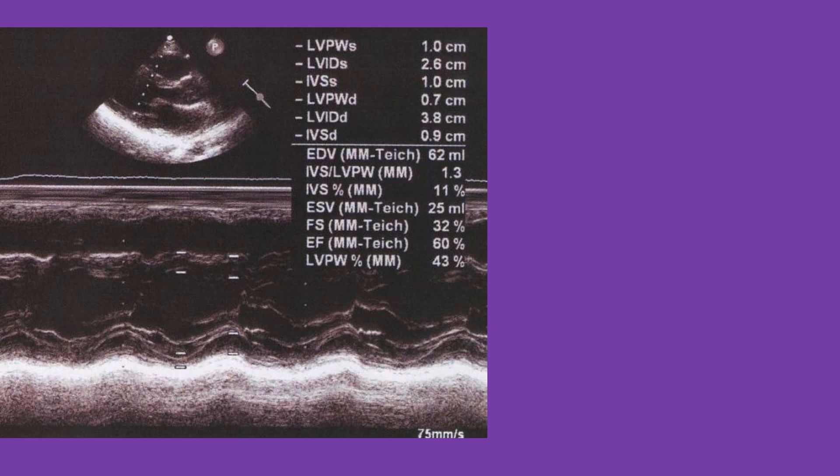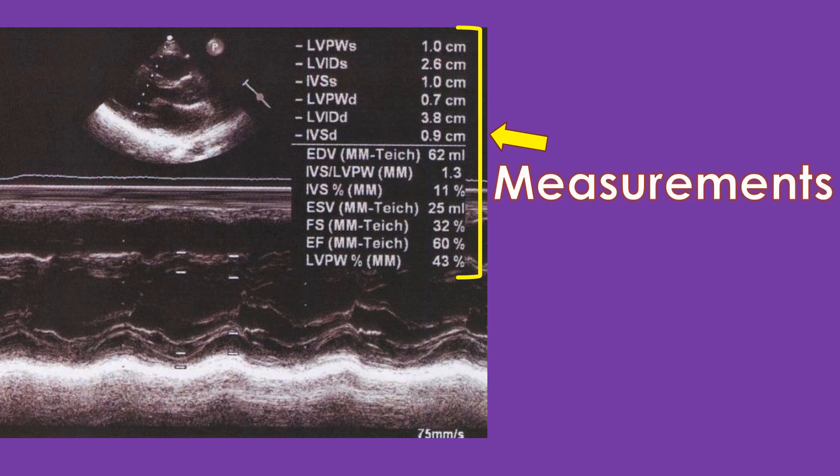Chamber sizes and measurements of the thickness of chamber walls are either given as tables or as relevant pictures showing the measurements printed on the report. In some reports, reference normal values are also provided. While looking at reports of children, measurements should be interpreted considering the physical size of the child, as heart chambers grow in size as the child grows.